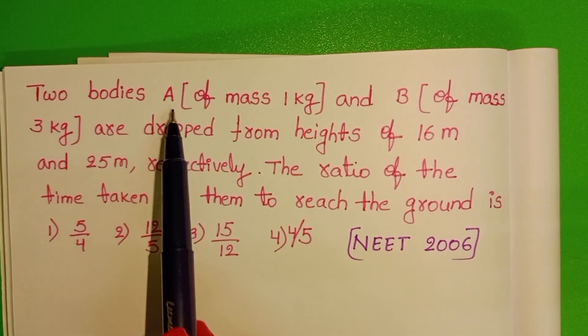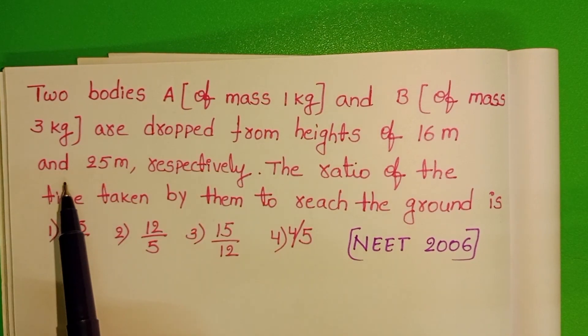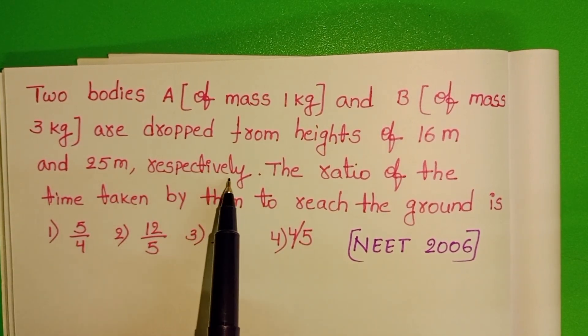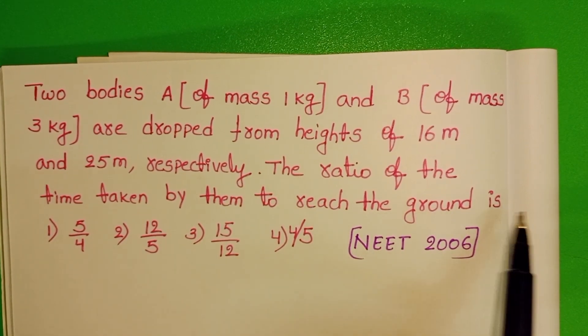Two bodies A and B are dropped from heights of 16 meters and 25 meters respectively. The ratio of time taken by them to reach the ground is: